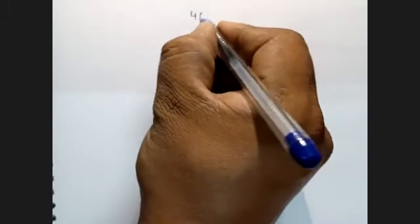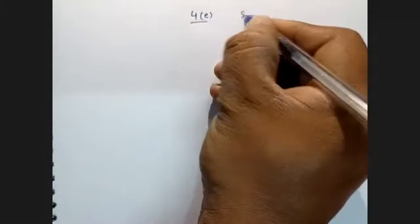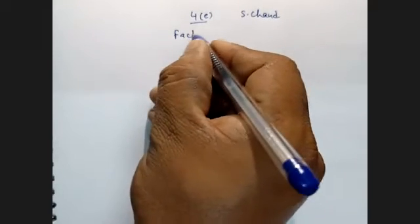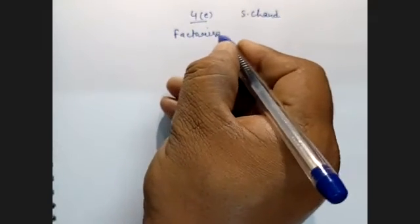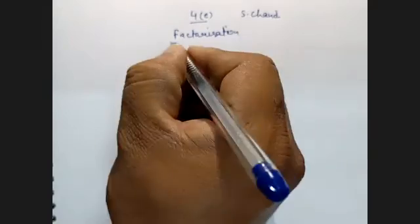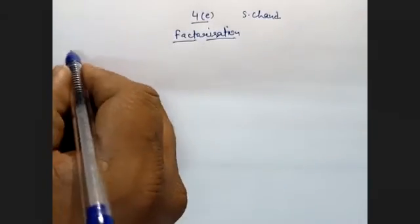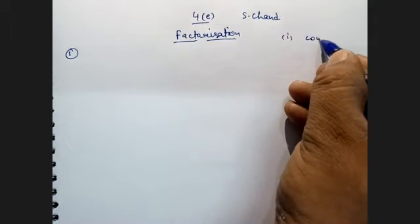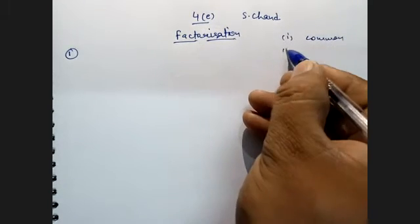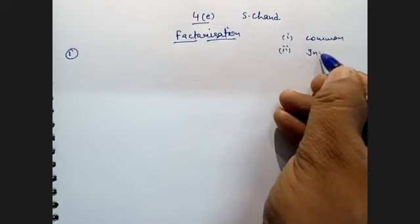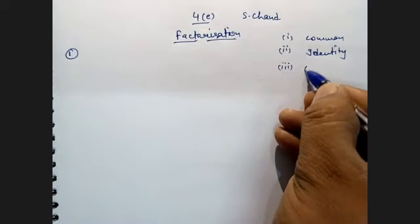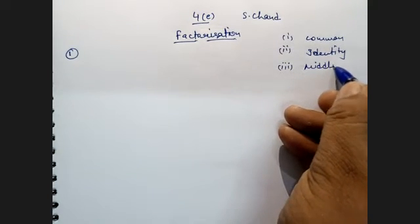Today we will start exercise 4E from S. Chan. The chapter name is Factorization. The first rule is common factor, the second one is identity, the third one is middle term split, and so on.